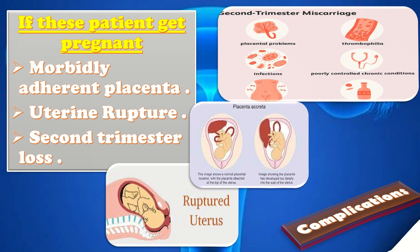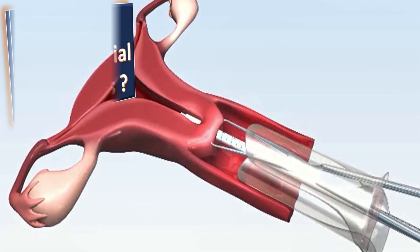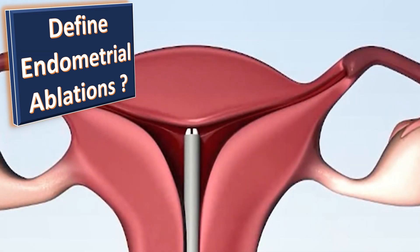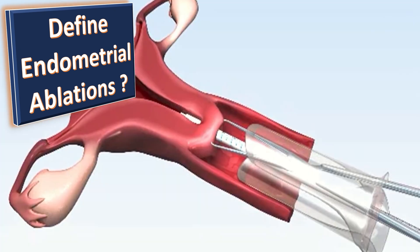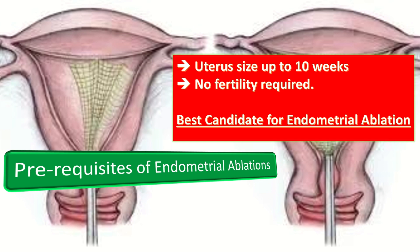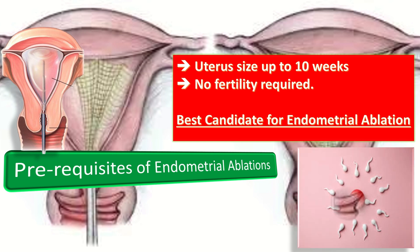Endometrial ablation is another technique for dealing with endometrial adhesions. It refers to techniques which permanently destroy the functional layer of endometrium and up to 5 mm of myometrium, to reduce heavy menstrual bleeding and deal with the problem of intrauterine adhesions. The main prerequisites are that the uterus size should be up to 10 weeks, no fertility should be required by the patient, and the best candidate is a woman in pre- or perimenopausal age who suffers from heavy periods.